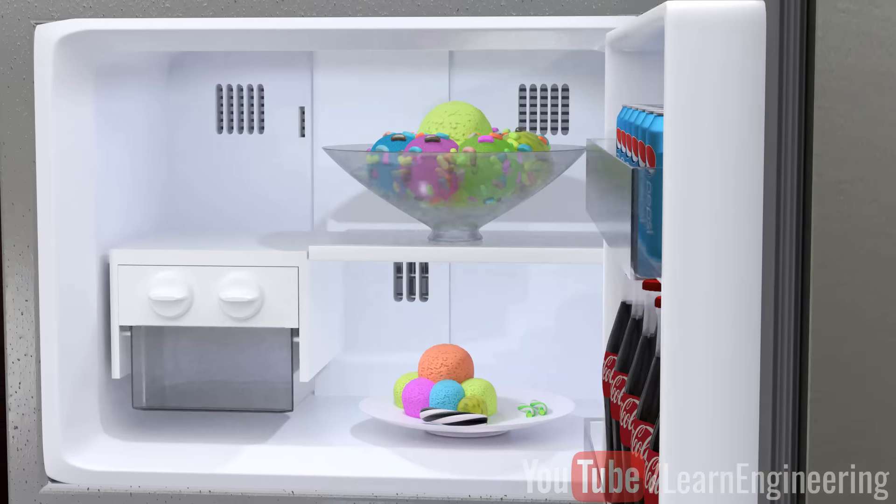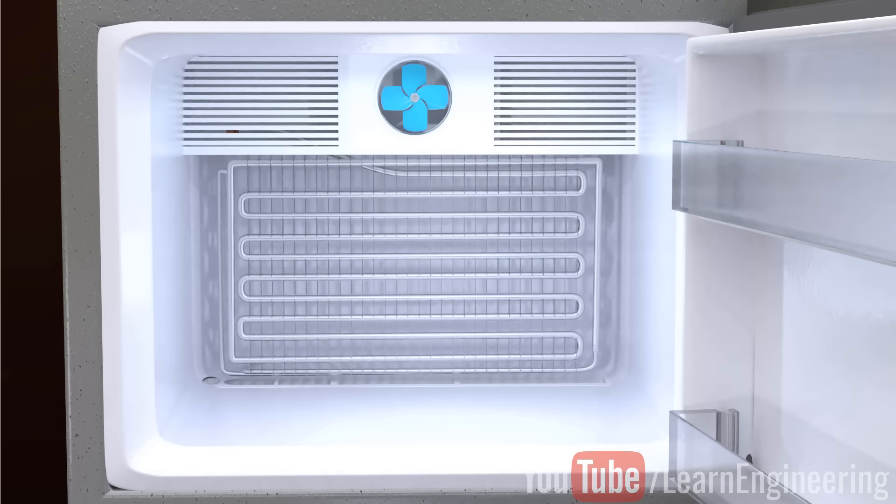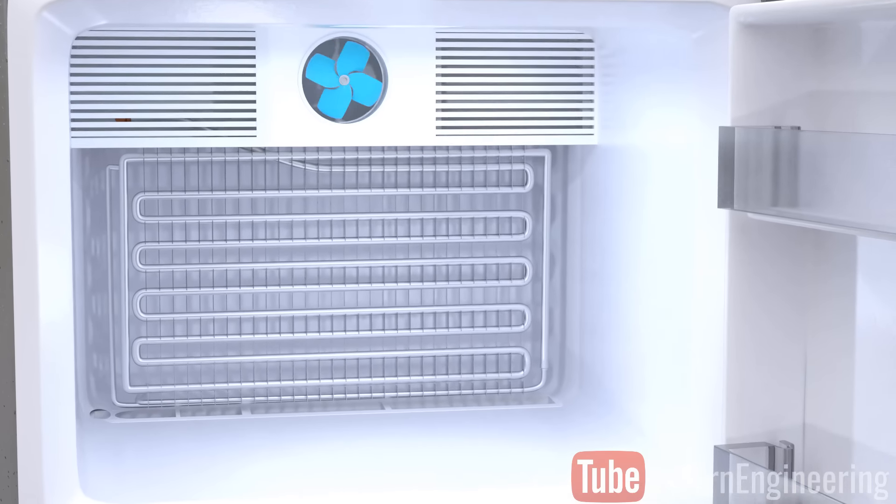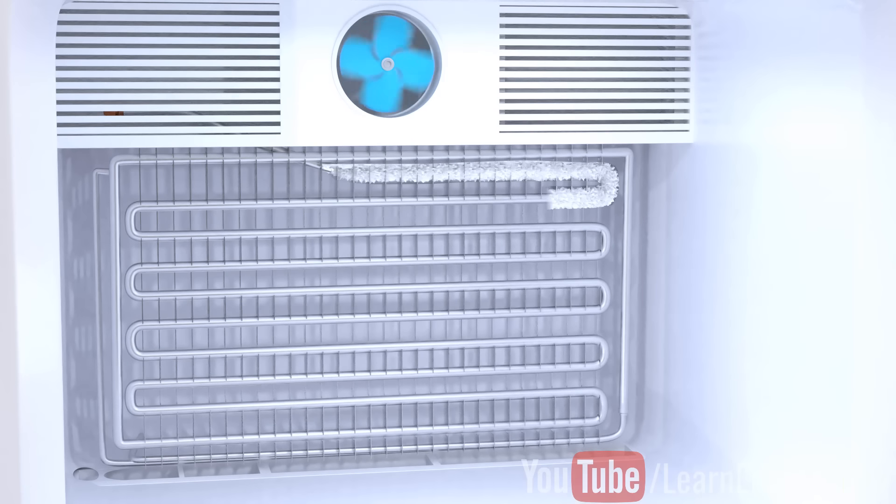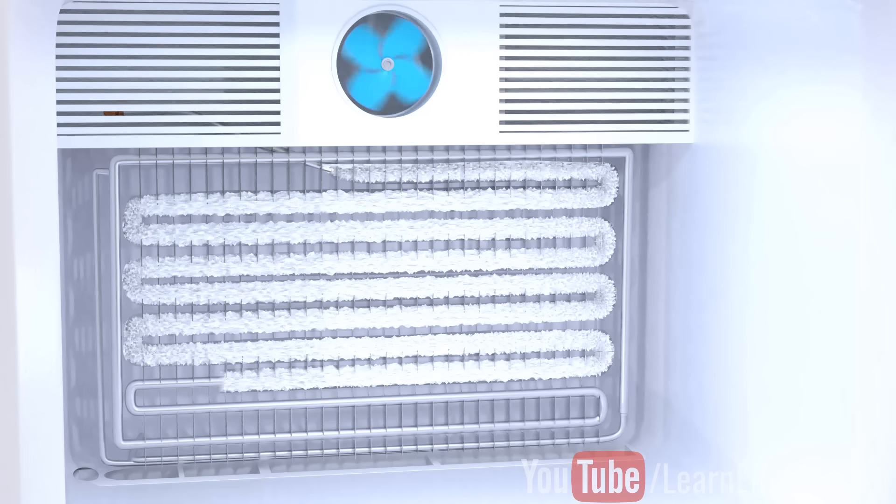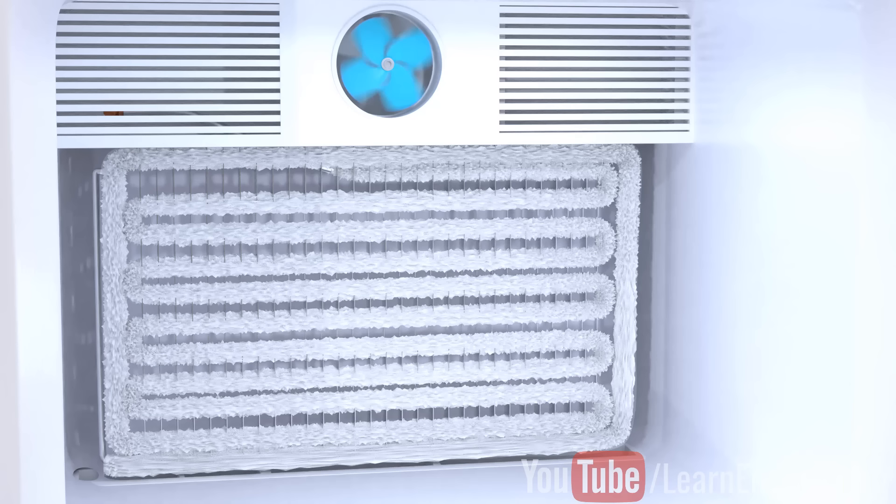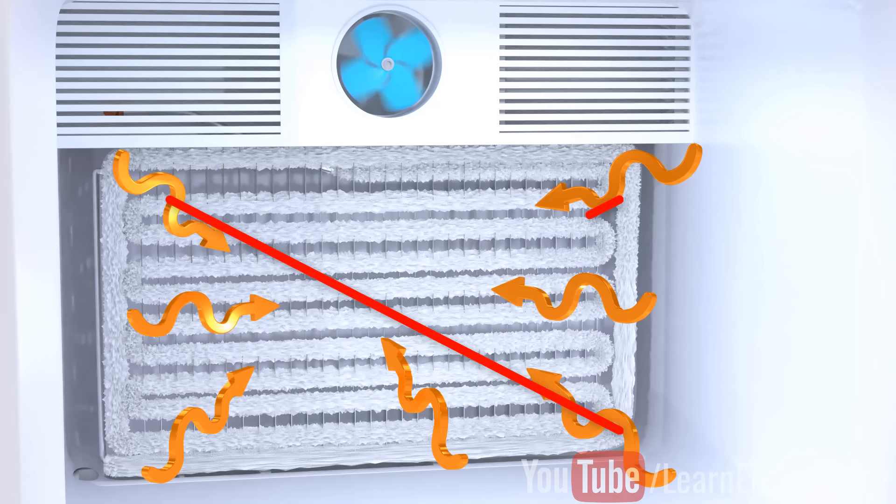One major issue is the frost developed in the freezer compartment. The circulated air has moisture content inside it, so when the air comes in contact with the cold evaporator coil, they will condense and form a frost around the coil. Such ice coating prevents further heat transfer, and the refrigerator becomes inefficient over time.